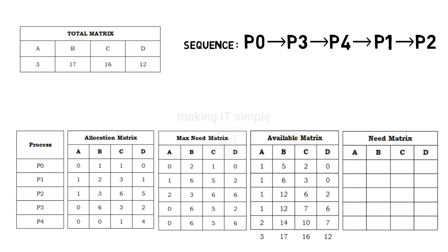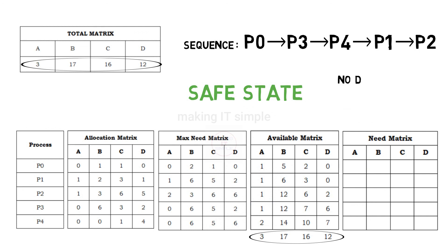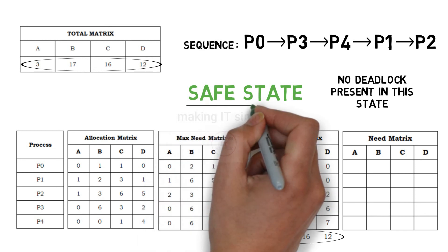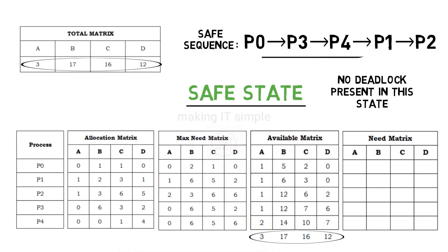As all the processes are executed and all resources got free, this means that this state is a safe state. That means deadlock cannot occur in this state. If with available resources we are unable to complete requests of all processes, then that state will be an unsafe state and deadlock may occur. But in this example all processes can be executed, so this state is a safe state, and the sequence that we generated is a safe sequence. This is how deadlock avoidance and Banker's algorithm works.